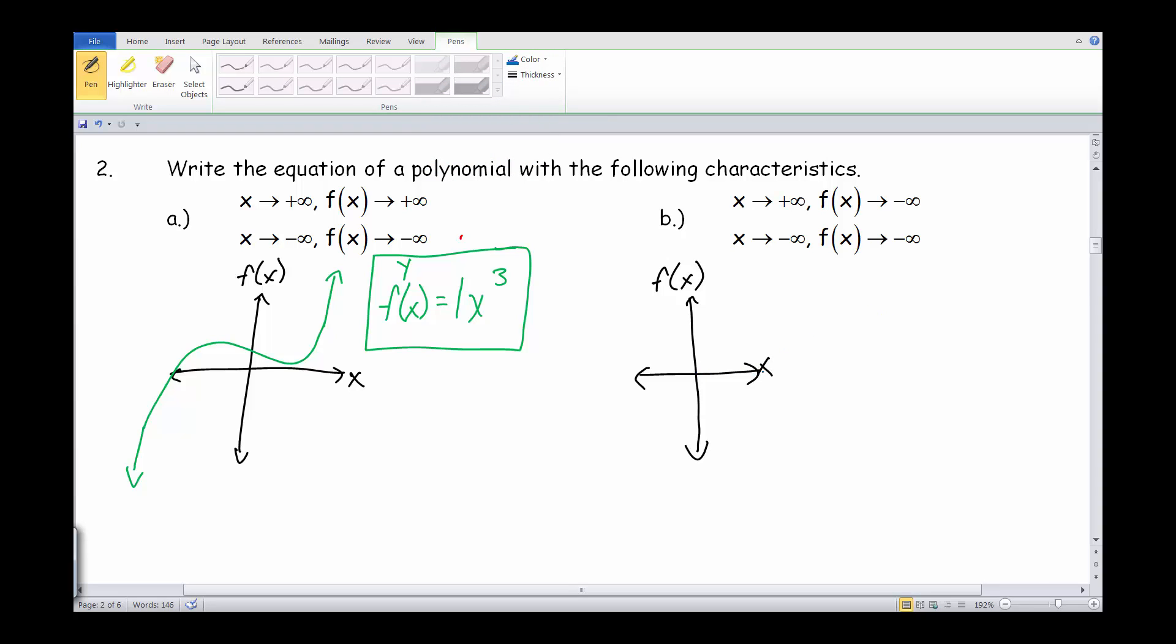As x goes towards positive infinity, we see that we are going down towards negative infinity. And then as x goes towards negative infinity, we see that we are also going down towards negative infinity. So right away, we notice that they are going in the same direction, so we do have a U shape.